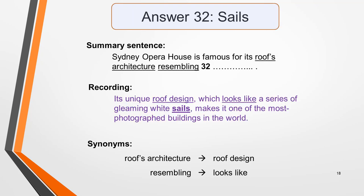Answer 32 is Sails. Here's the summary sentence, followed by the section of the recording the answer appears in. Sydney Opera House is famous for its roof's architecture resembling... and the recording: Its unique roof design, which looks like a series of gleaming white sails, makes it one of the most photographed buildings in the world. And here are the synonyms that have been used. Roof's architecture for roof design. And resembling for looks like.